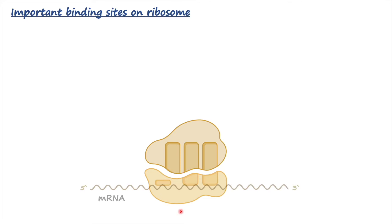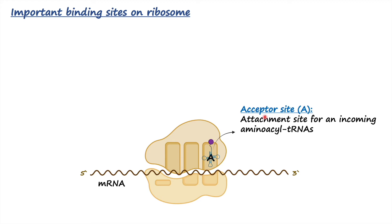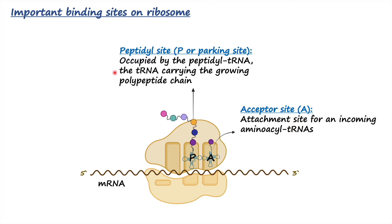Here we have the ribosome and the mRNA strand. The first site on the ribosome is called the A site, or acceptor site. This is the site which accepts an incoming aminoacyl-tRNA — that is, the transfer RNA which carries an amino acid attached to it. The second site is called the P site, or peptidyl site, sometimes called the parking site.